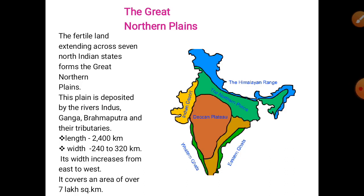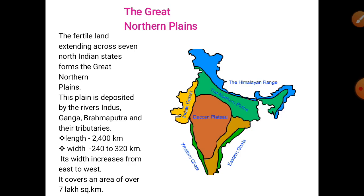In this section we are going to learn the next type of landforms — the Great Northern Plains. It is the most fertile land extending across seven north Indian states. It lies to the south of the northern mountains, that is south of the Himalayan mountain. This plain is deposited by the rivers Indus, Ganga, Brahmaputra and their tributaries. The length of the northern plains is 2400 km and the width is 240 to 320 km, with width increasing from east to west.